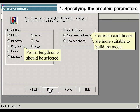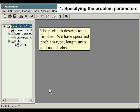The proper length units should be selected. Cartesian coordinates are more suitable to build the model. The problem description is finished. We have specified problem type, length units, and model class.